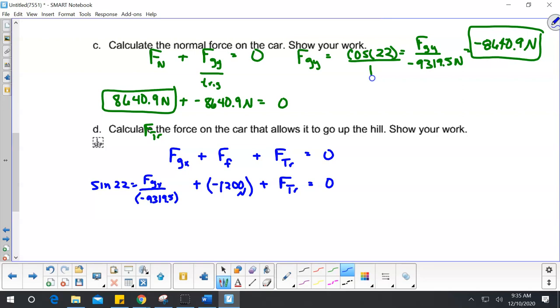So that's going to tell me that my force gravity in the x I got that it was, I put this over 1 and cross multiply, a negative 3,491 newtons plus a negative 1,200 newtons plus force traction equals 0. So when I add these up, I get force traction equals 4,691 newtons. And it is positive because I said going up that ramp was in the positive direction.